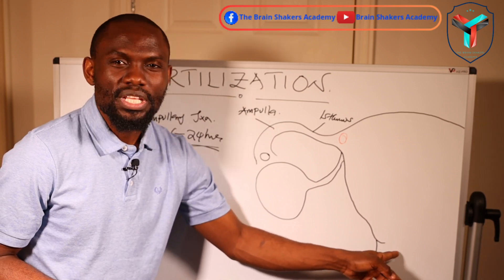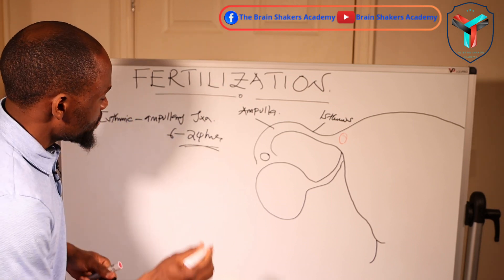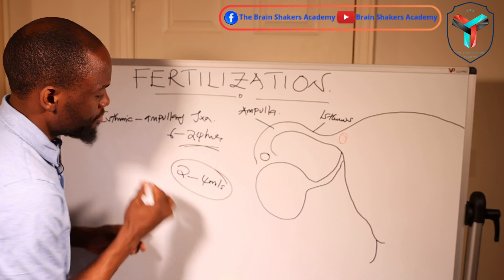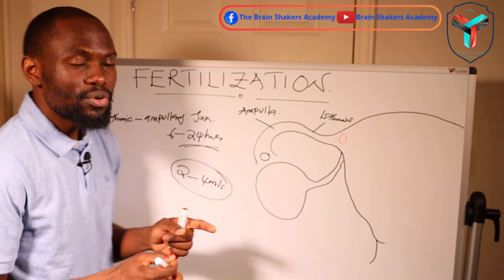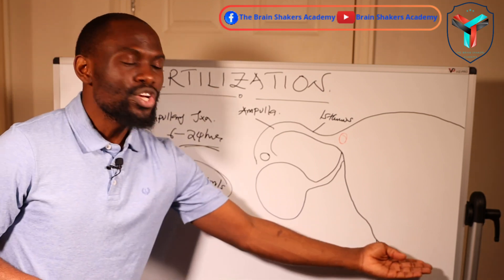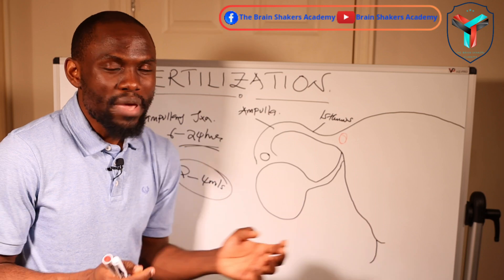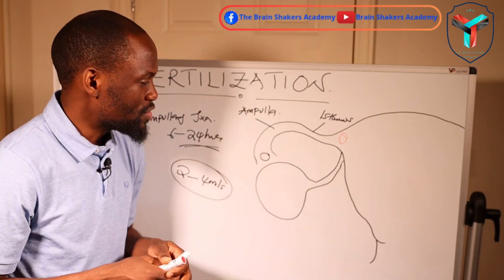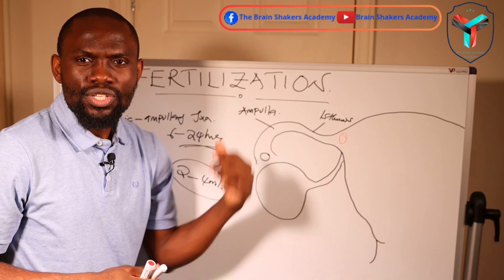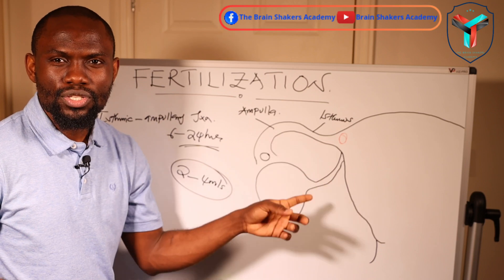Once spermatozoa is deposited in the vagina, there will be about 2 to 4 mls of seminal fluid. This seminal fluid acts as a buffering system, neutralizing the acid in the vagina to make the environment conducive for the sperm to find its way through to the cervix, the uterus, and then to the fallopian tubes.